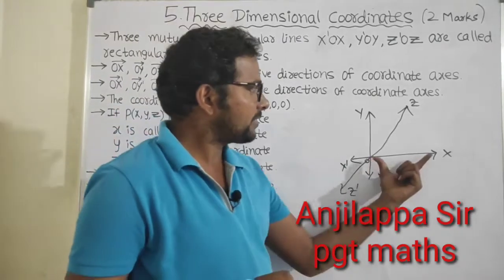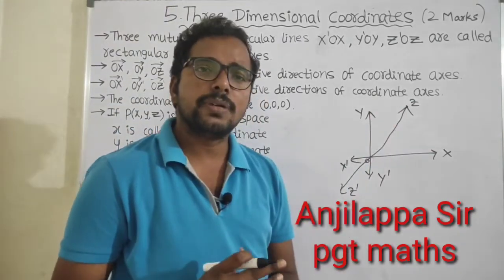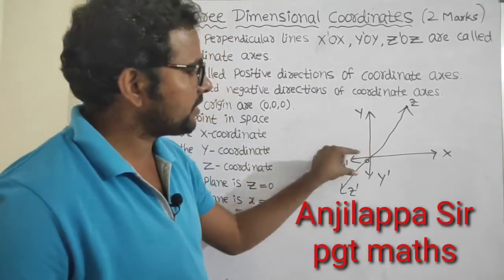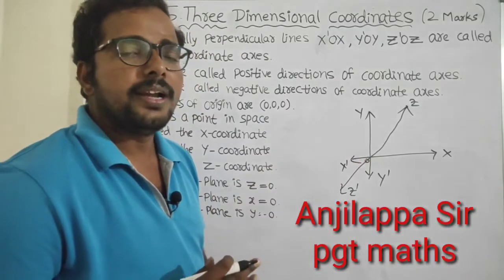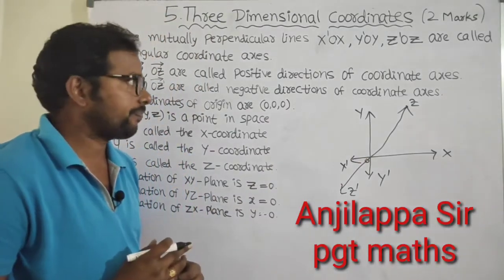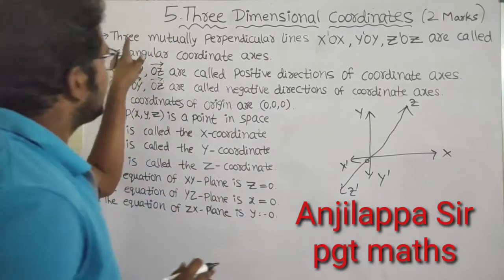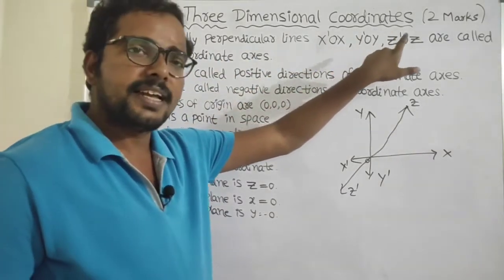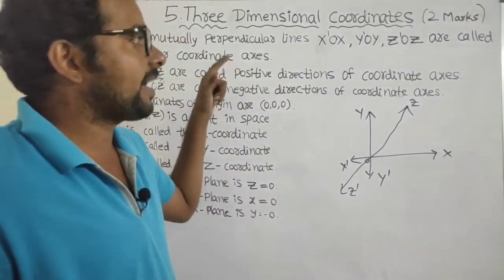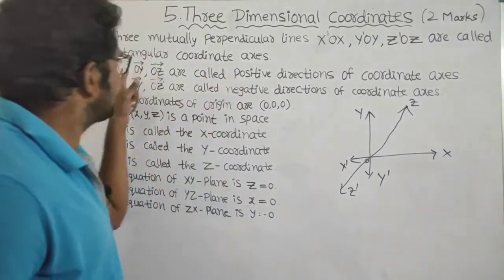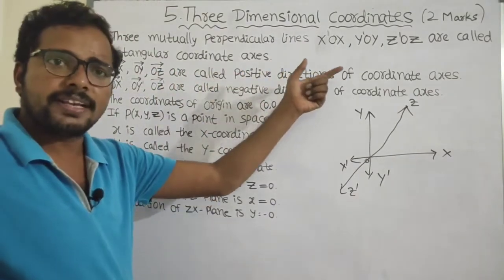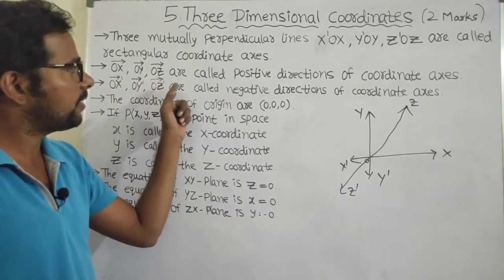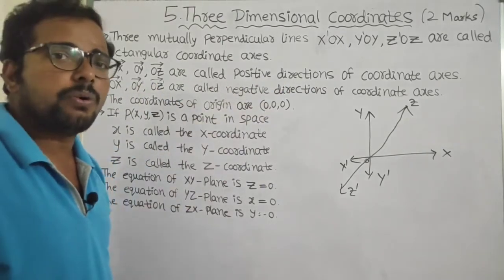Here, OX, OY, and OZ are called the positive directions of the coordinate axis. And OX-dash, OY-dash, and OZ-dash are called the negative directions of the coordinate axis. The three mutually perpendicular lines — X-dash OX, Y-dash OY, and Z-dash OZ — are called the rectangular coordinate axis.